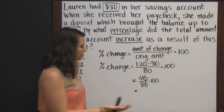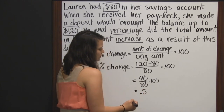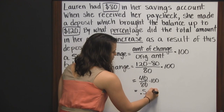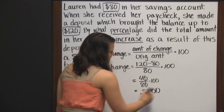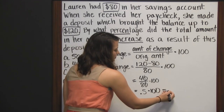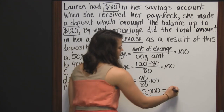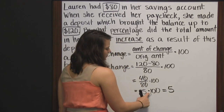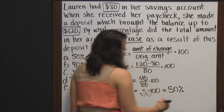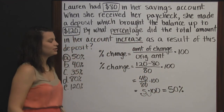Or, since we want to change it to a percent, 5 tenths, which is equivalent to 4 eighths or 1 half. So we multiply that times 100. This is our decimal, but we want a percent, so multiplying by 100 simply moves your decimal two places to the right, and we fill the empty seat with a zero. So it's 50 percent — it was a 50 percent increase. Answer A.